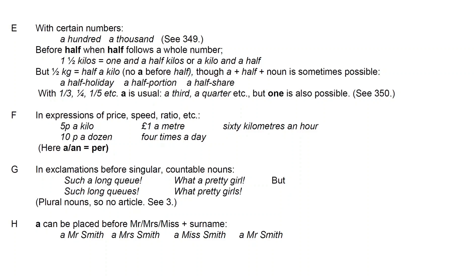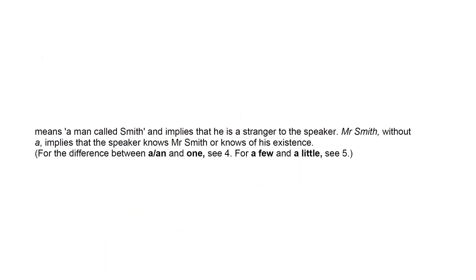The article A can be placed before Mr., Mrs., or Miss. Saying 'a Mr. Smith' means a man called Smith and implies that he is a stranger to the speaker. 'Mr. Smith' without the A means that the speaker knows Mr. Smith, or knows of his existence.